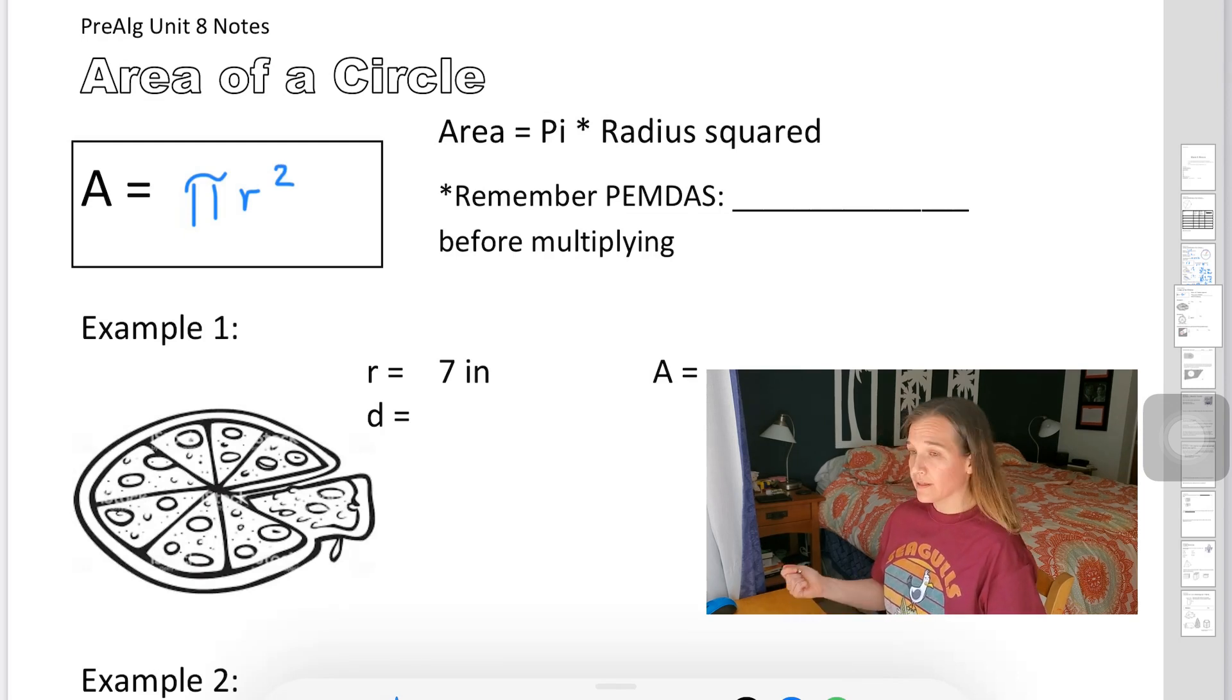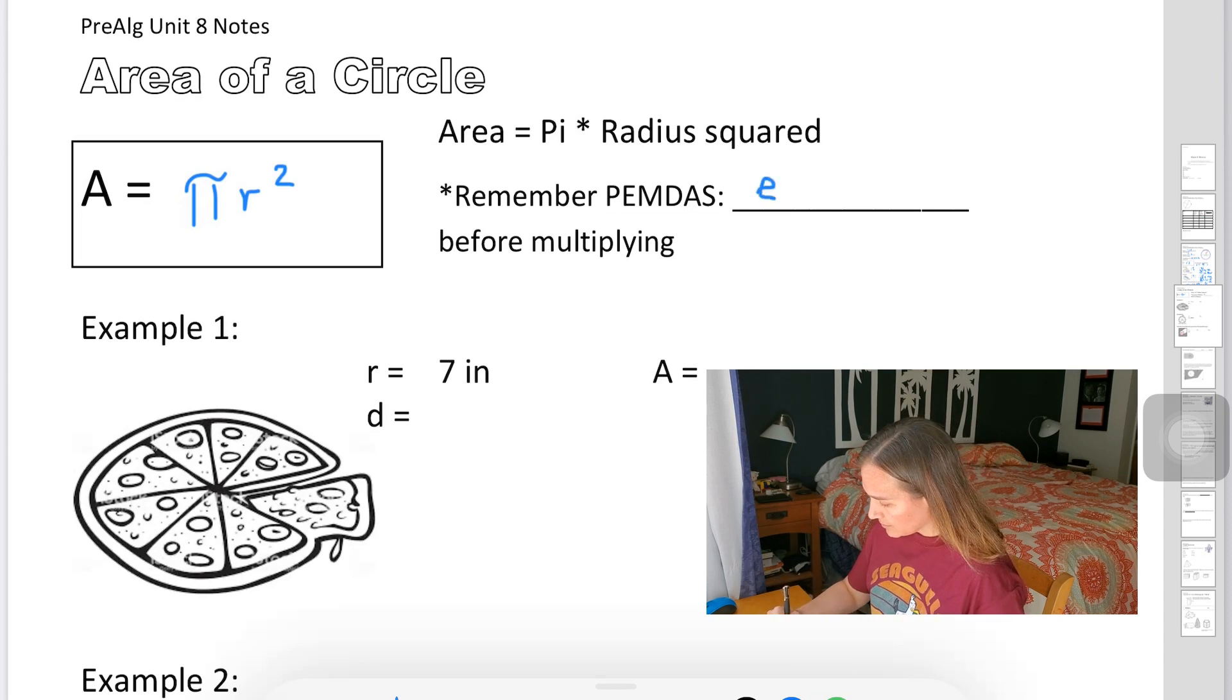And one thing that's really important on this is that remember in PEMDAS, we always use exponents before we multiply. And so in this case, you need to make sure that you're solving the exponent part first. You square the thing first.